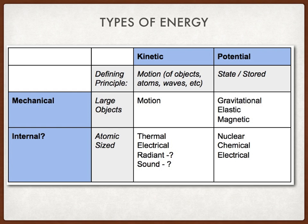In terms of mechanical energy, we consider motion for kinetic energy. For mechanical energy, we consider potential energy, which includes gravitational, elastic, and magnetic. For internal or kinetic internal energy at the atomic scale, these include thermal, electrical, radiant, and sound energy. For the potential internal energy, we have nuclear, chemical, and electrical.